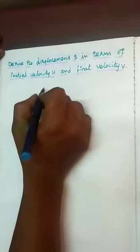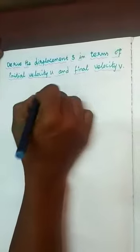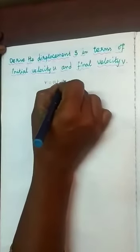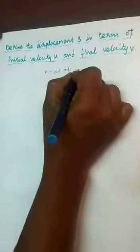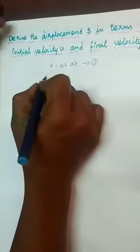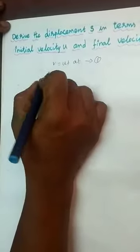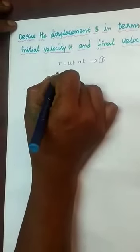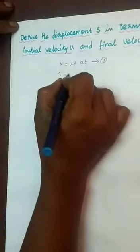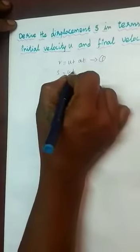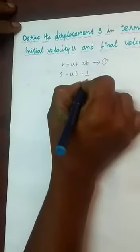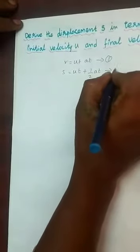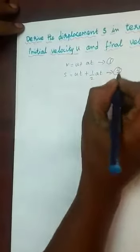So, in the first two equations of motion, V is equal to U plus A T. This is the first equation. Next, the displacement equation S is equal to U T plus half A T squared. This is the second equation.